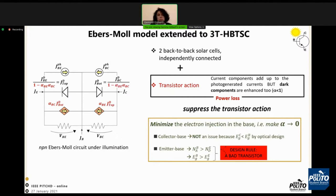In order to suppress this effect, it is necessary to minimize the electron injection in the base, making the coefficient alpha close to zero.